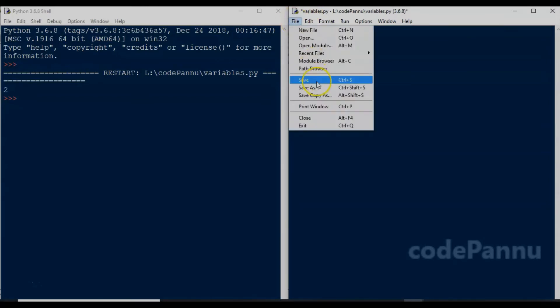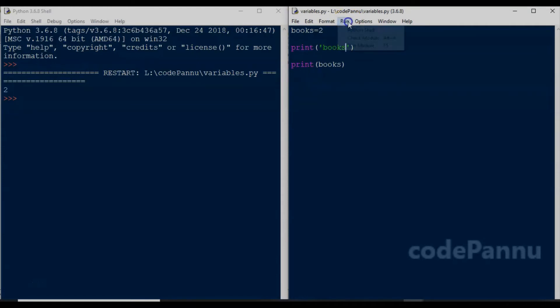Now save the file and run the code. What happened? Why did Python print the word books instead of the value 2?